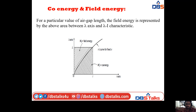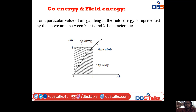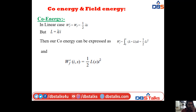The slanted cross marks give the field energy Wf, and the horizontal cross marks give the co-energy W'f. The linear increasing curve gives the I-to-λ curve for a fixed x value.